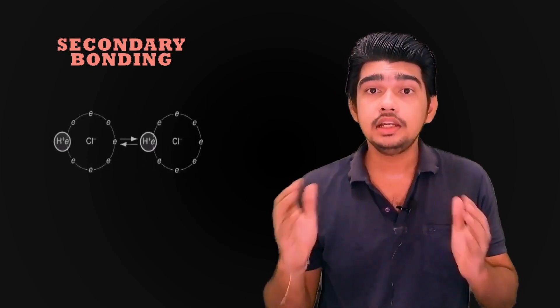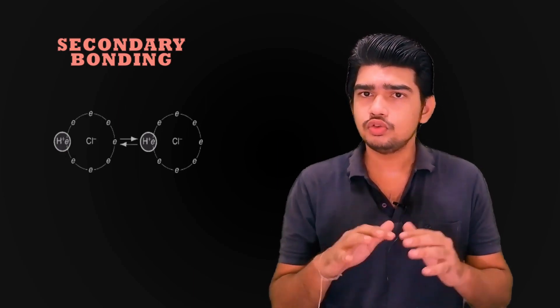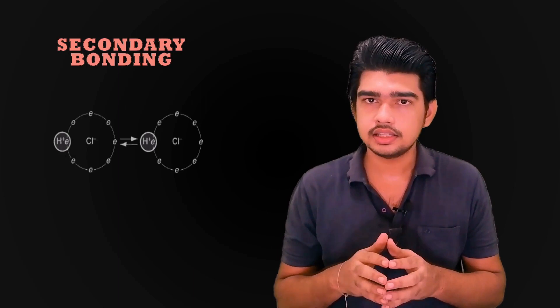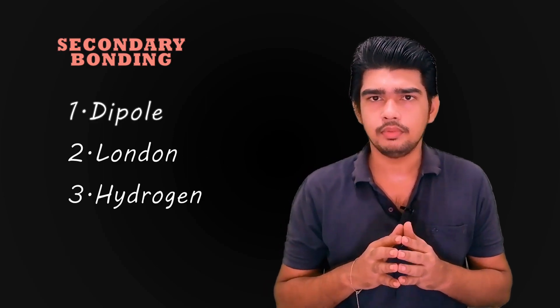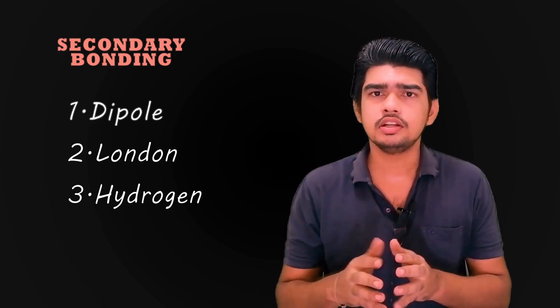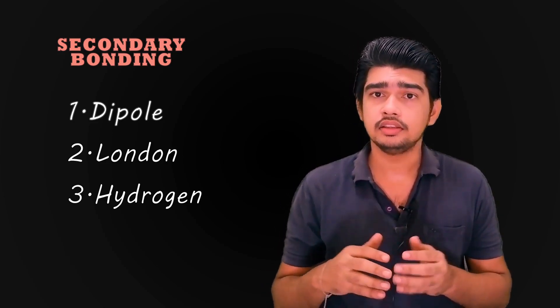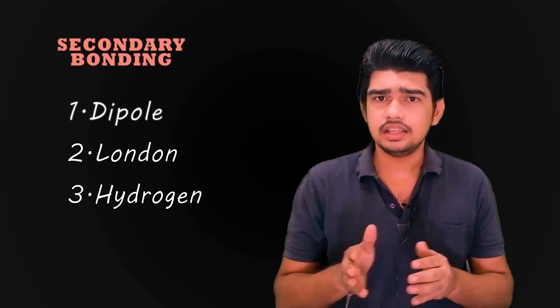Primary bonds involve atom-to-atom attractive forces. Secondary bonds involve attraction forces between molecules or intermolecular forces. There is no transfer or sharing of electrons in secondary bonding, and these bonds are therefore weaker than primary bonds. There are three forms of secondary bonding: dipole forces, London forces, and hydrogen bonding.